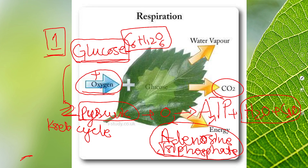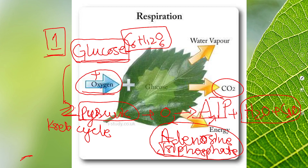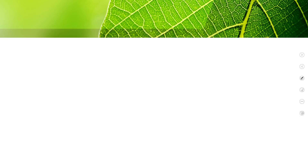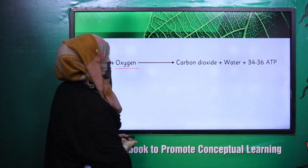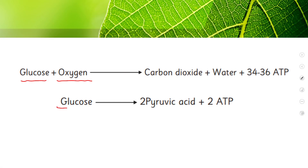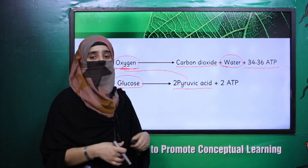This cellular respiration that occurs in the presence of oxygen is also called aerobic respiration. As a result, the plant produces energy for itself, while water and carbon dioxide are formed as waste products. The word equation for cellular respiration: first, glucose is broken down into two pyruvic acids; then the pyruvic acids react with oxygen to produce carbon dioxide, water, and ATP molecules. The net total ATP molecules produced in cellular respiration are almost 34 to 36, which the plant uses as energy.